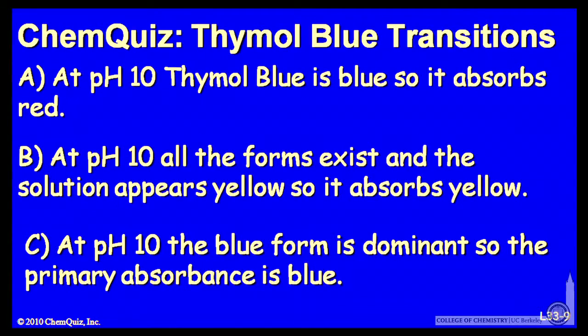Let's look at a possible explanation for each answer. A: at pH 10, thymol blue is blue, so it absorbs red. B: at pH 10, all the forms exist, and the solution appears yellow, so it absorbs yellow. C: at pH 10, the blue form is dominant, so the primary absorbance is blue. Think about those and make a selection.